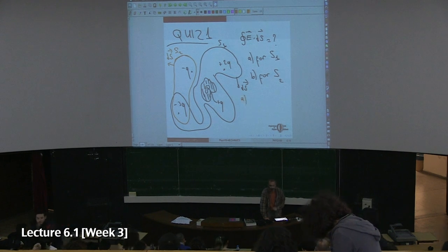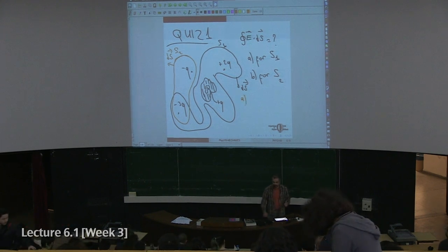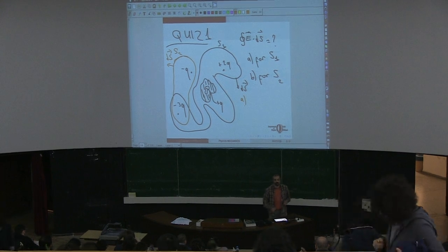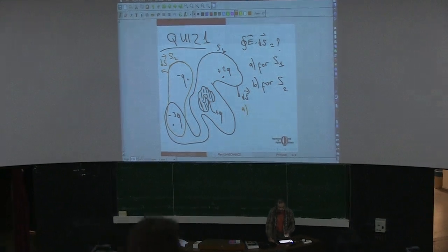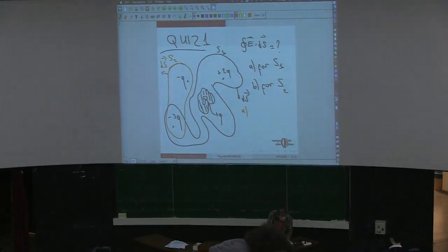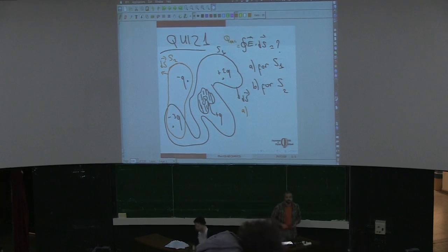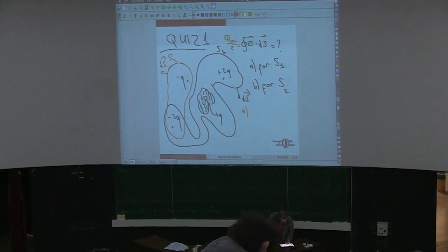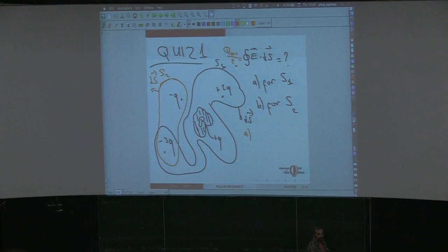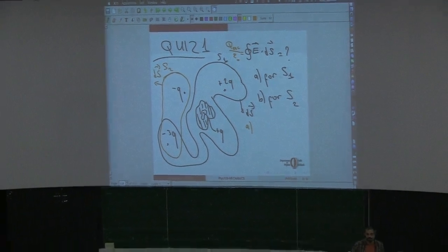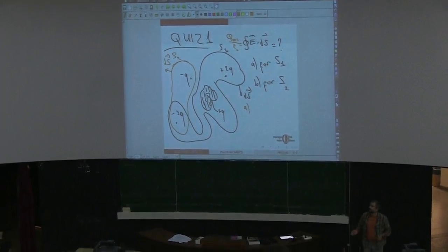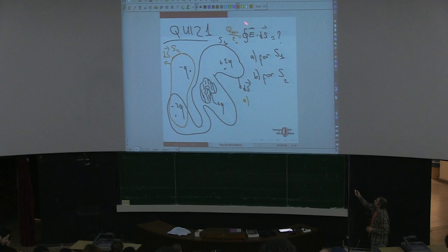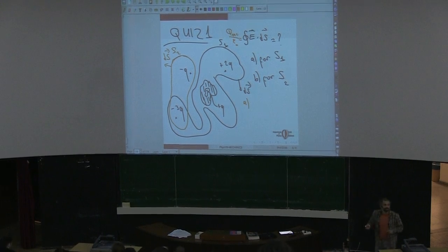The answer for part A. Let's remember Gauss's law: if you take any surface, no matter how complicated the shape, the integral of the electric field over that surface is always the enclosed charge divided by ε₀. This is independent of how complicated the shape is, or whether the charges inside are in metals or other materials. Whatever the charges are, the integral is always the enclosed charge divided by ε₀.